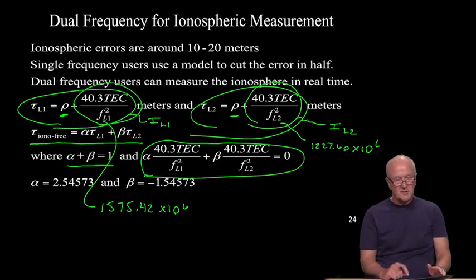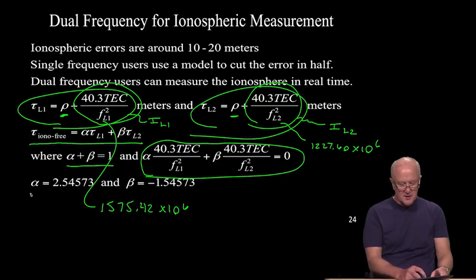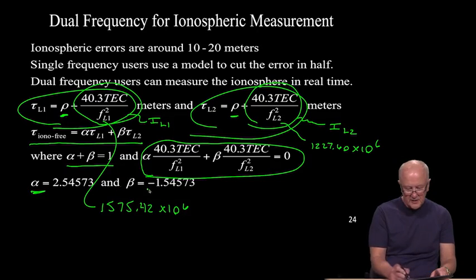If that's true, if we can find that kind of blend of the L1 and L2 pseudoranges, we'll have exactly what we want. Something where the pseudorange, rho, is preserved, but the iono is extinguished. Well, you can set up these equations. I invite you to do it. You can solve and you'll find alpha is equal to 2.54573, beta is equal to negative 1.54573.